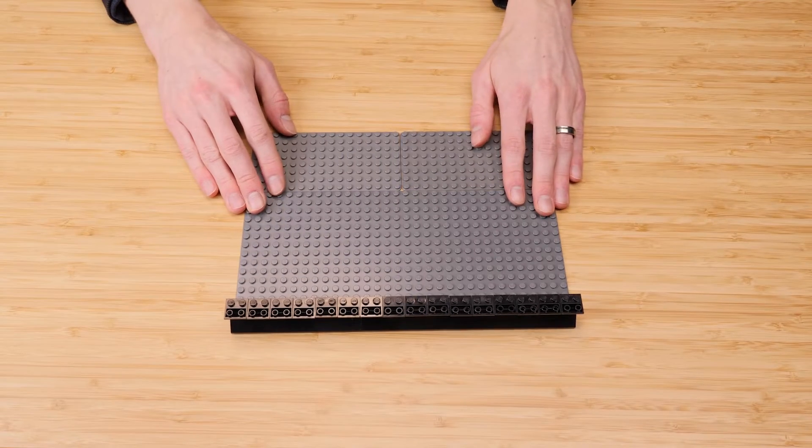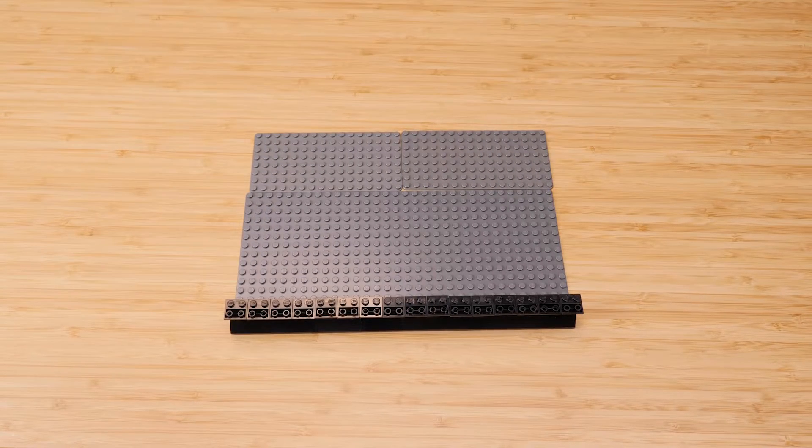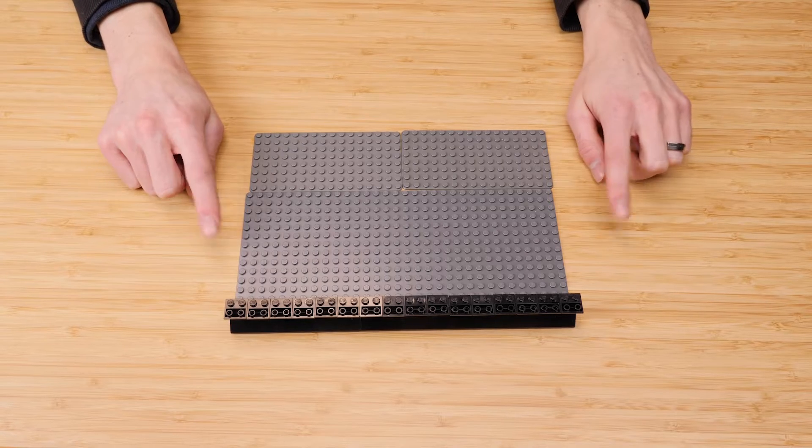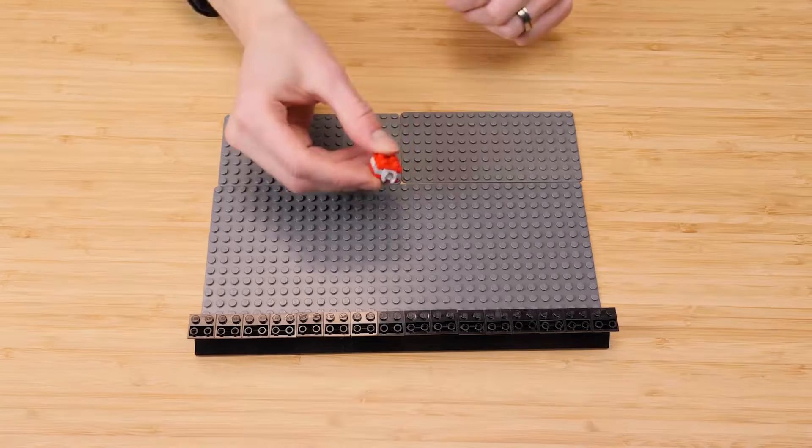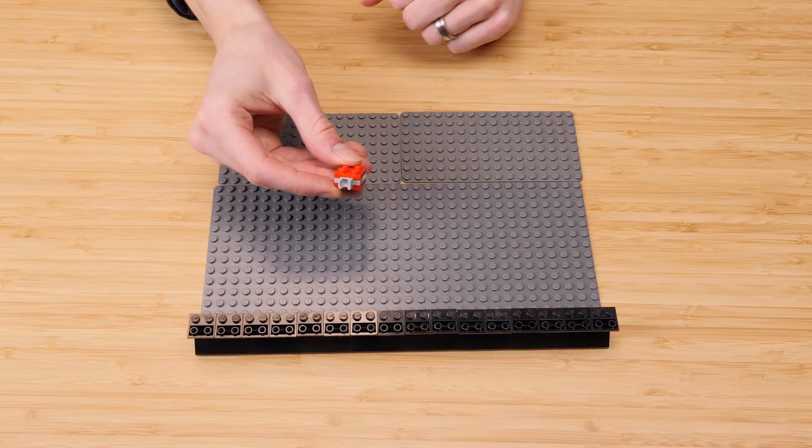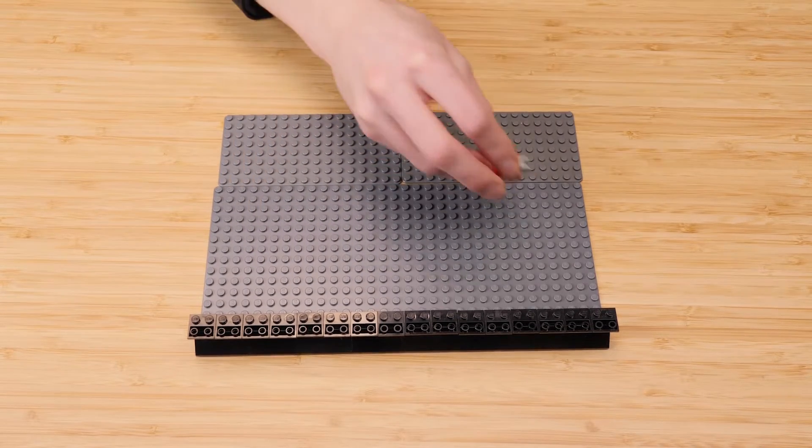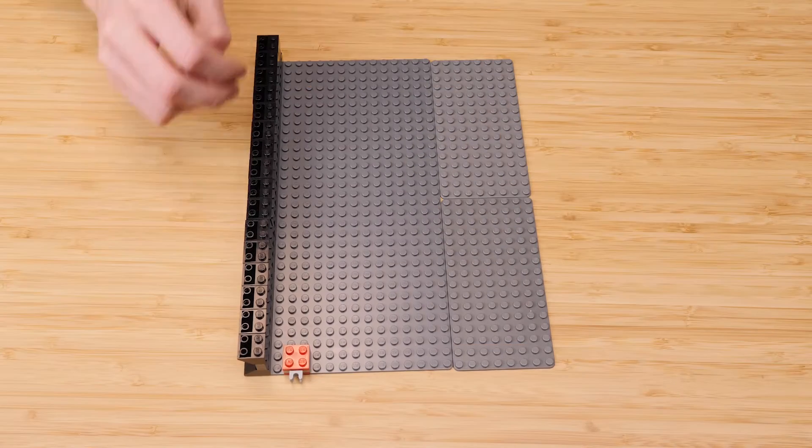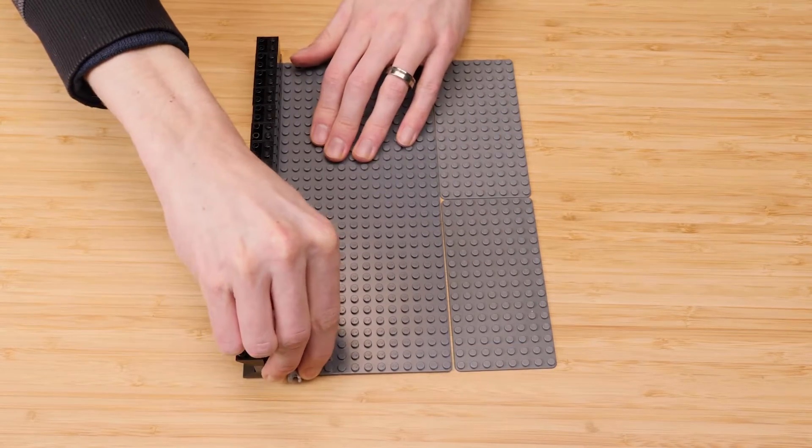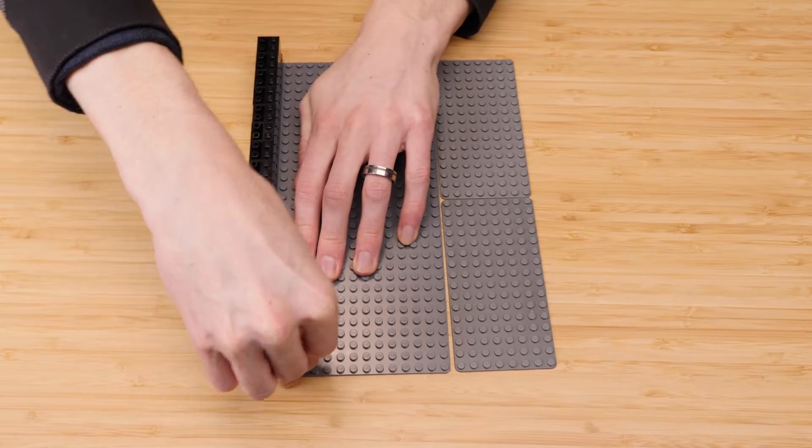No matter how you end up building this, you've got to make sure your connection points are consistent. And that is definitely something I've messed up in the past. For me, the open end of the ball joint goes on this side, three studs from the edge. And also with this one, I'm actually going to set it back one like this.